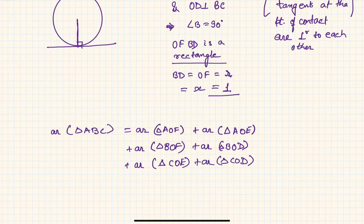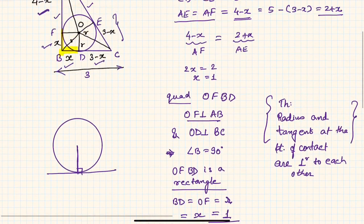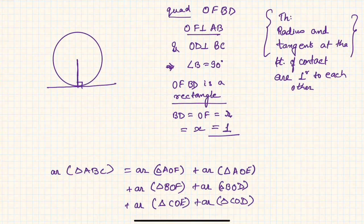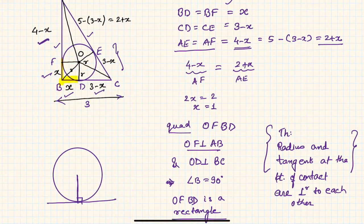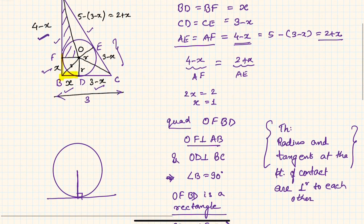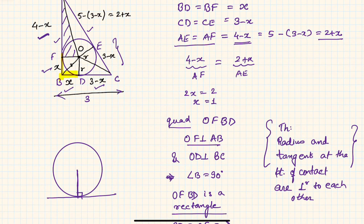The total area is the sum of all those small triangles. The area of triangle ABC is one-half times base times height. For triangle AOF, the area is one-half times (4 minus x) times r, where r is the radius of the inscribed circle.